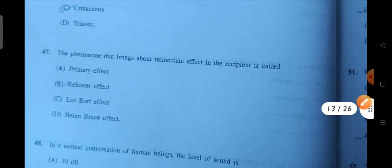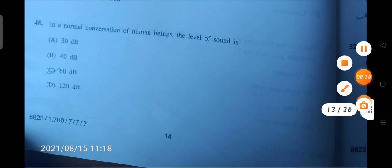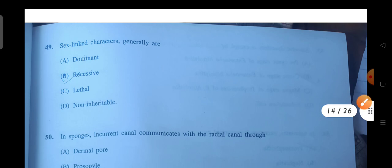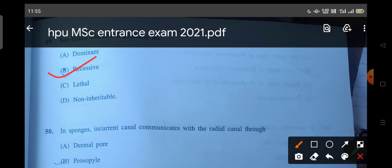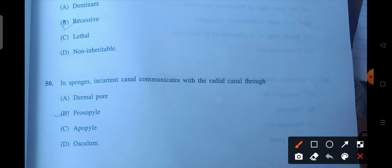Next question is the pheromones that bring about immediate effect in the recipient is. So that is your releaser effect. Next is in a normal conversation of human beings the level of sound is. So level of sound is your 60 decibels. Next is sex-linked characters generally are. So what are they? Generally they are recessive. Next question and today's last question that we are going to discuss: in sponges, incurrent canals communicate with the radial canal through. So your B will be the correct answer.